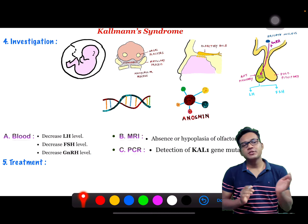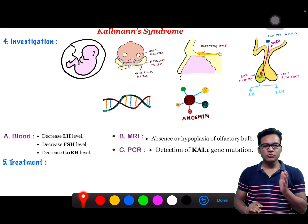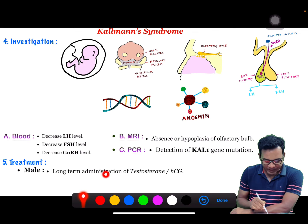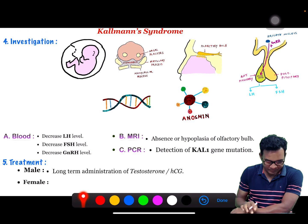For treatment, from the physiological point of view, just know the basic part. In males, long-term administration of testosterone or HCG is used. In females, pulsatile administration of GnRH and GnRH analogs is used. That was all about Kallmann syndrome.